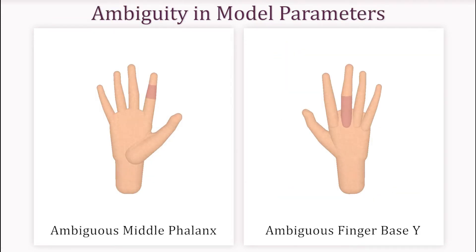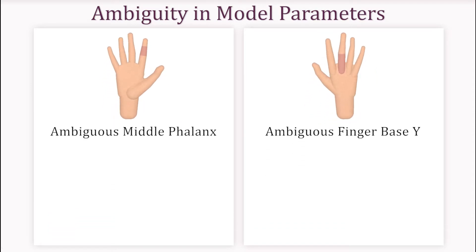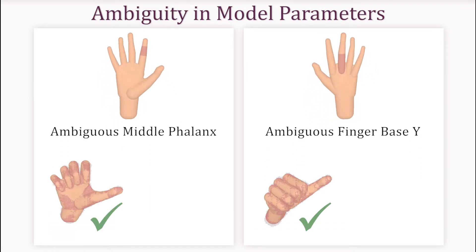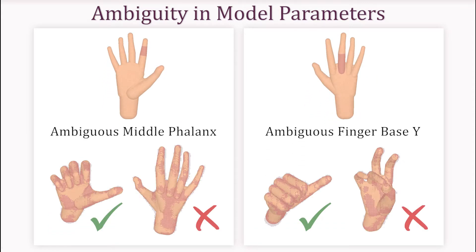Multiple frames are strictly necessary as no single pose contains all the needed information. We can see that to regress a given parameter there are good and bad poses, but how can we detect these automatically? If this is possible, can it be used to get rid of offline calibration sessions?